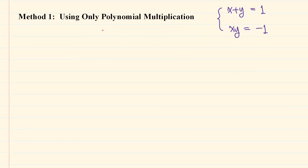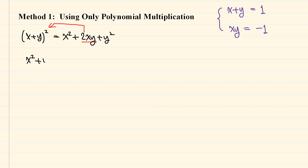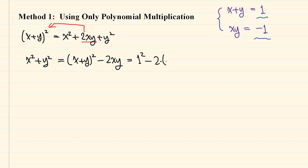In method 1, we only use polynomial multiplication and no other concepts. We start with the very basic and famous identity: x plus y squared, which is x squared plus 2xy plus y squared. From here, if we move 2xy to the other side, we have x squared plus y squared equals x plus y squared minus 2xy. Using these values, we have 1 squared minus 2 times minus 1, which is 3.